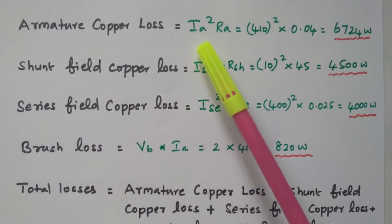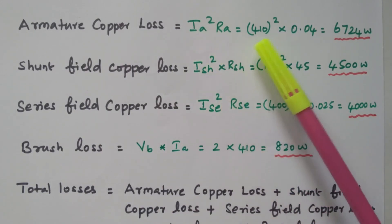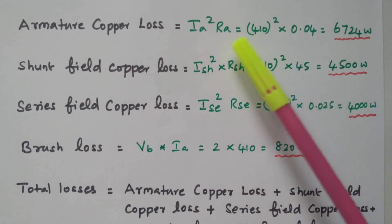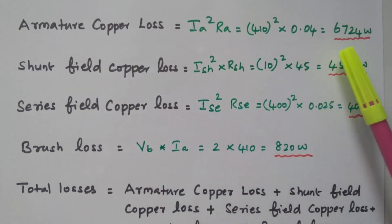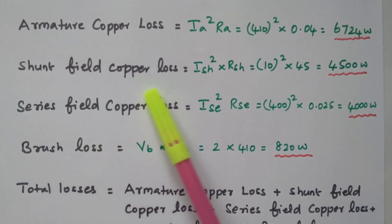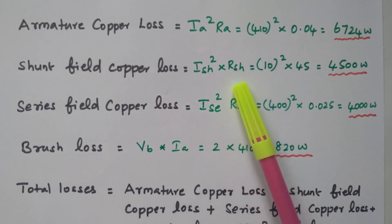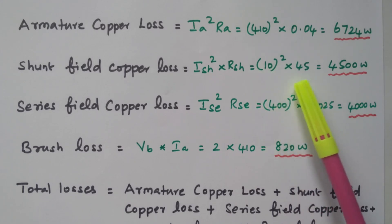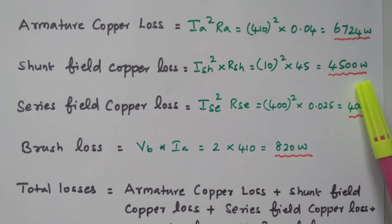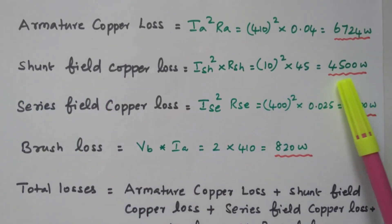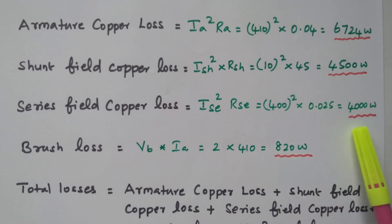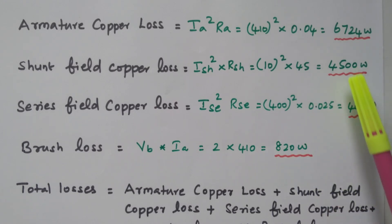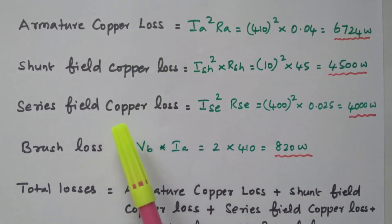Armature copper loss equals Ia² × Ra. Ia is 410 ampere, so 410² × 0.04 equals 6,724 watts. Shunt field copper loss equals Ish² × Rsh: 10² × 45 equals 4,500 watts. Series field copper loss equals Ise² × Rse: Ise equals IL = 400 ampere, so 400² × 0.025 equals 4,000 watts. We have now calculated the armature, shunt field, and series field copper losses.